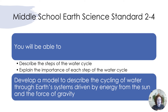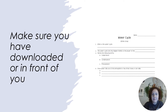So what is truly happening at each moment? Standard 2-4 states that you're going to be able to develop a model to describe the cycling of water through Earth's systems driven by energy and the force of gravity — our energy source being the sun, and our force of gravity pulling it toward and away from the Earth. Make sure you have your notes in front of you and we will get going.